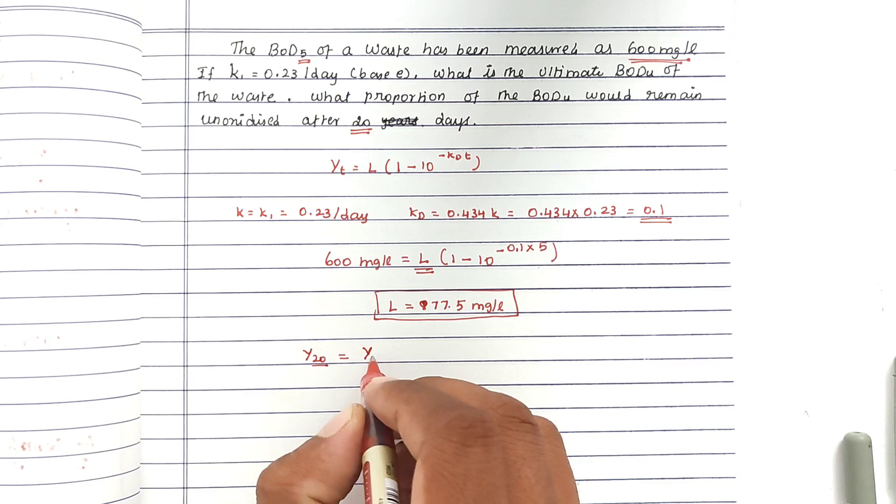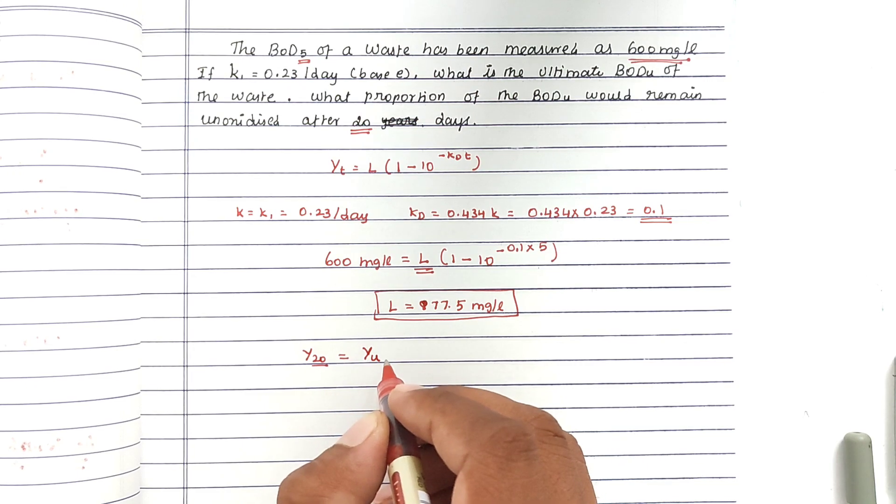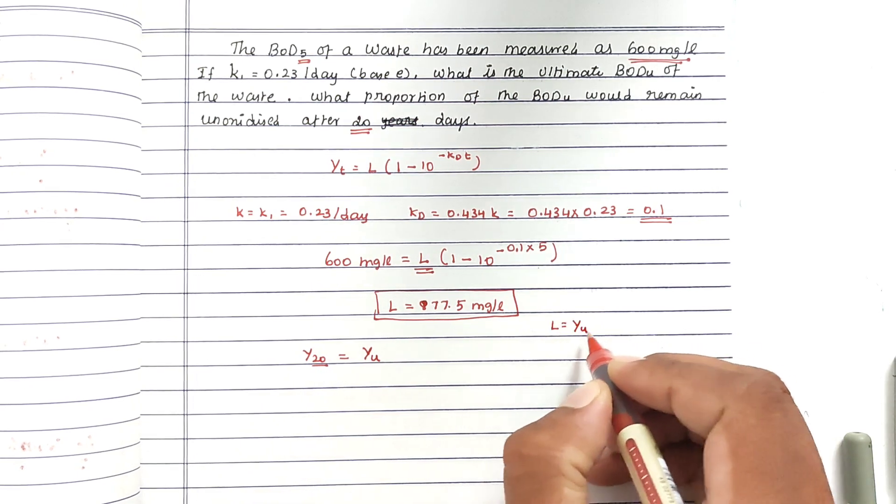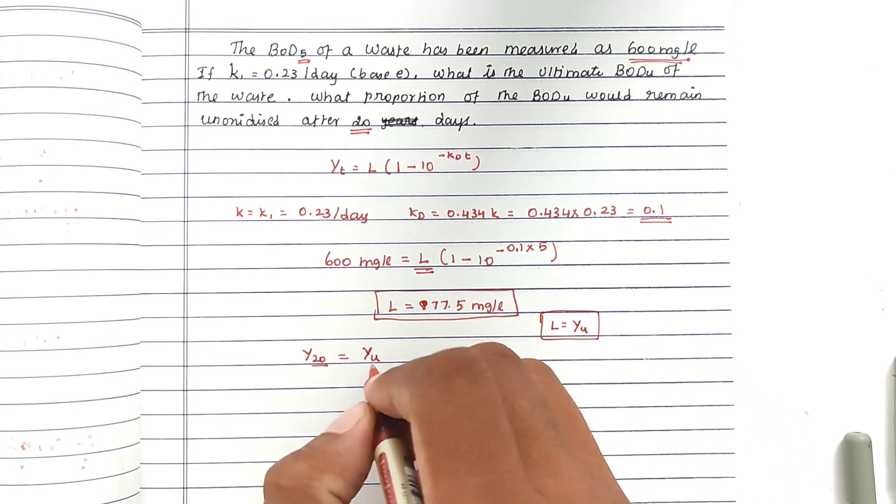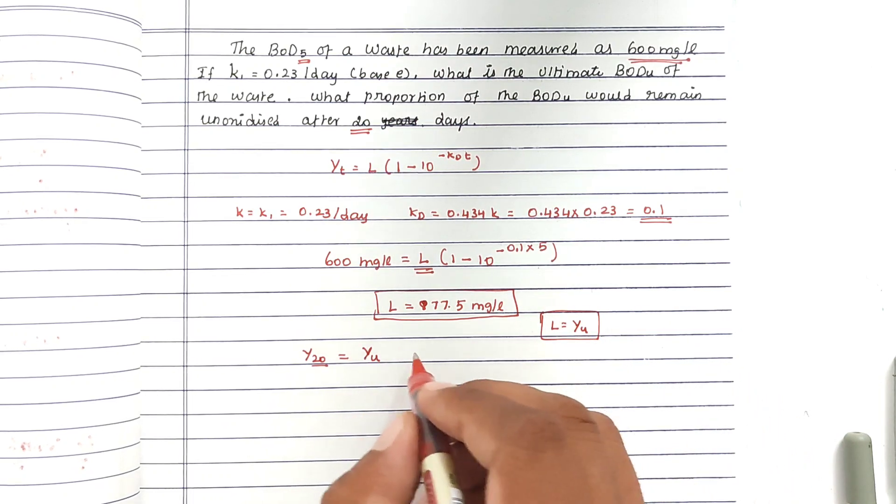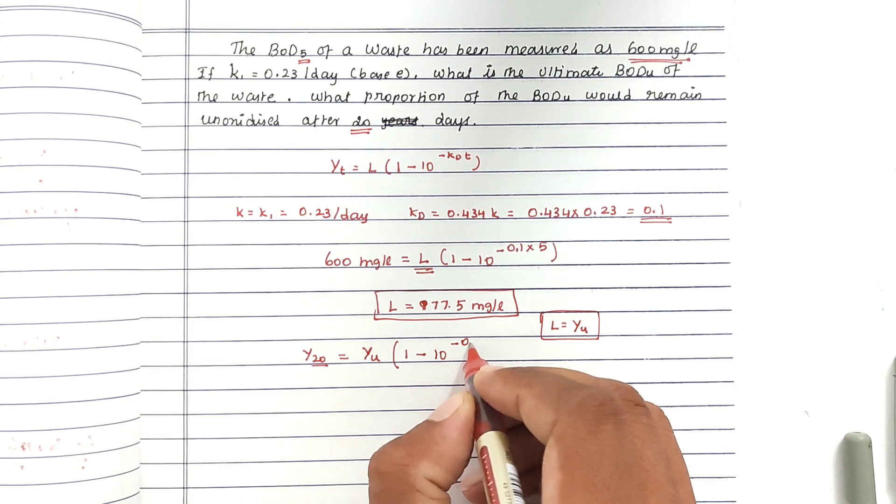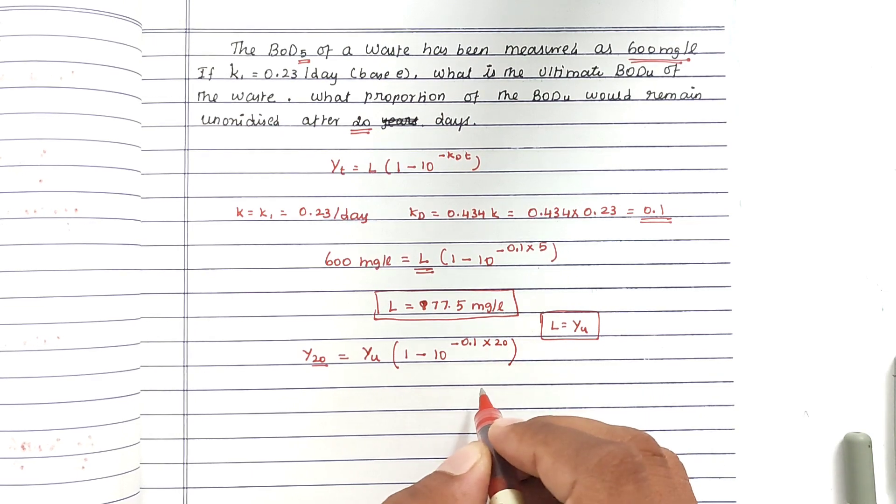We can take YU, so L = YU. Now we have to find out the unoxidized, so we are putting YU into (1 - 10^(-0.1×20)).